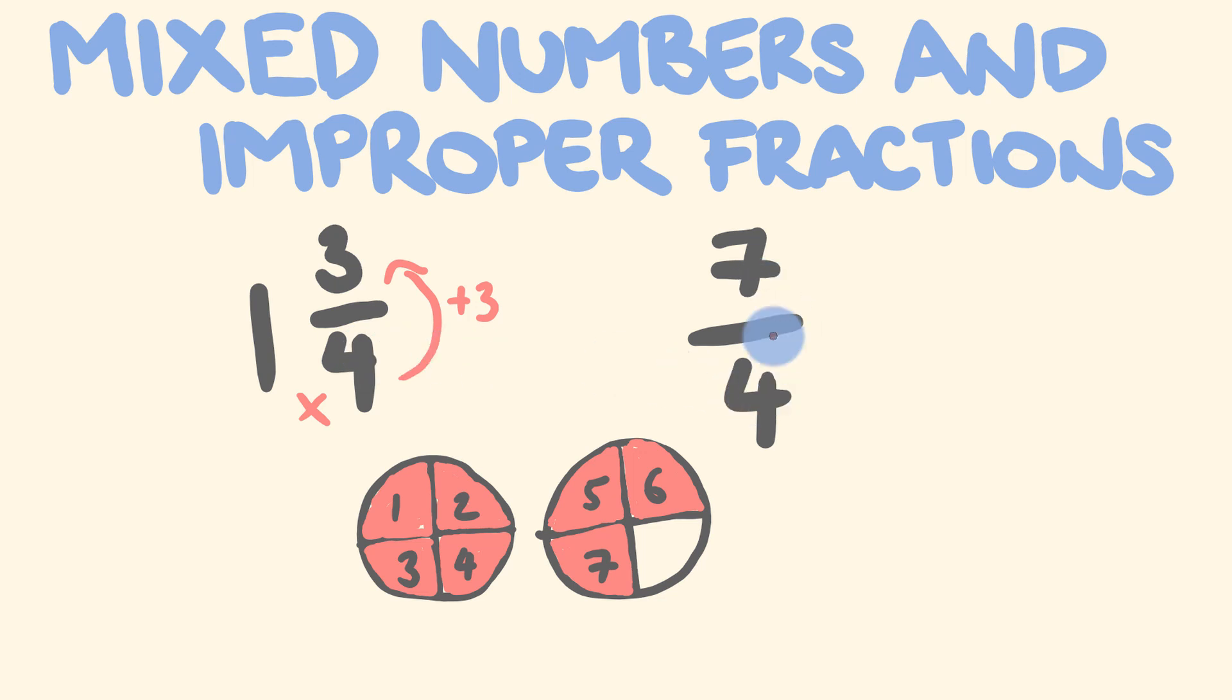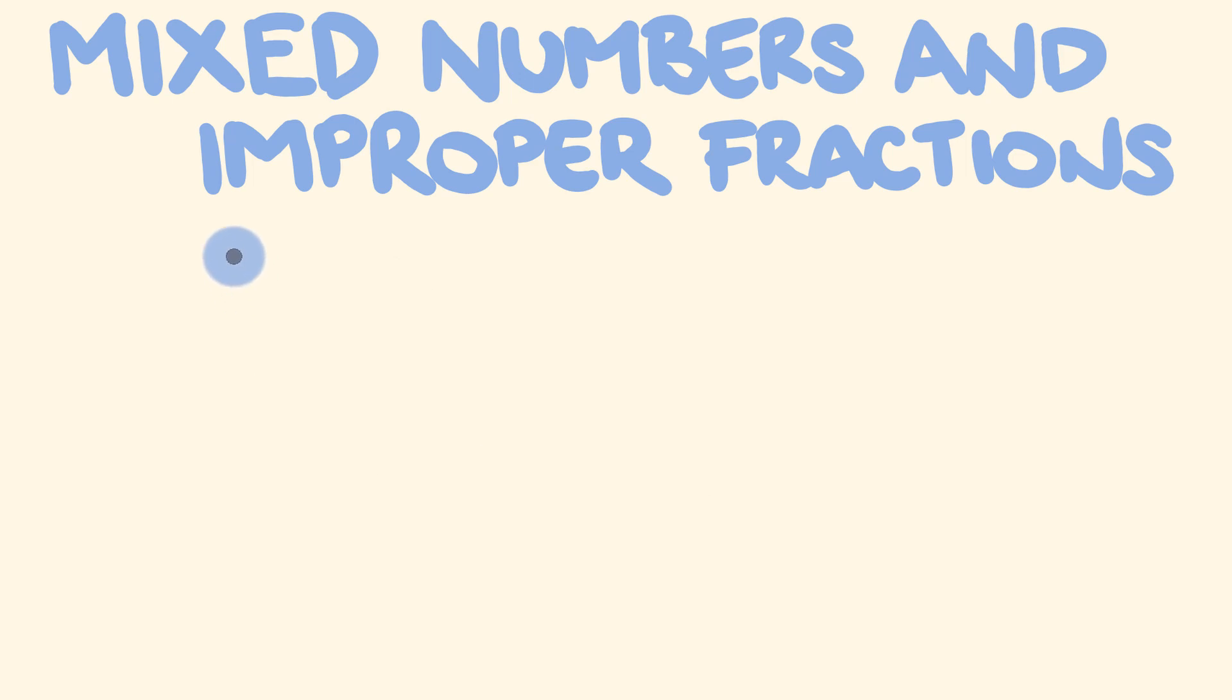What about if we were trying to change from the improper fraction across to the mixed number? Well, this is pretty simple. This line here just means divided by - 7 divided by 4 is 1 with 3 left over. So 1 with, and then you put the 3 out of the denominator. So let's have a look at that without the pictures here. Say you wanted to put 11 over 5 as a mixed number. At the moment, it's an improper fraction. How would you go about doing that?